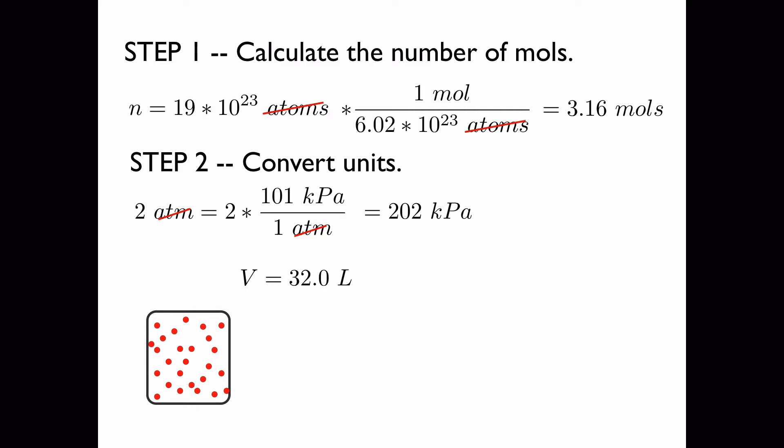To convert the volume to meters cubed we have to divide by 1,000 because there are 1,000 liters in a cubic meter. So we get this for our volume.